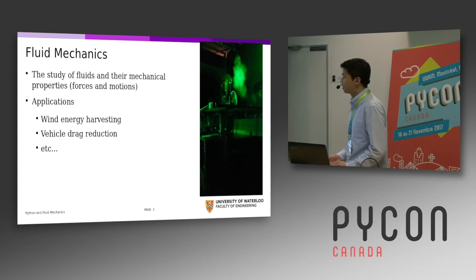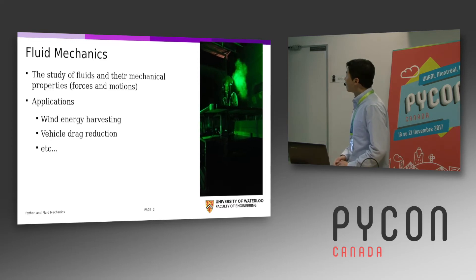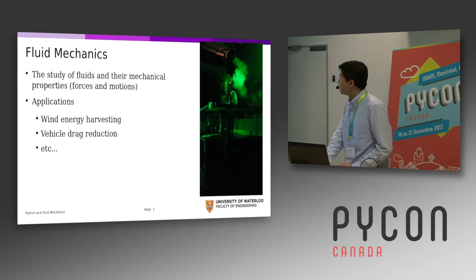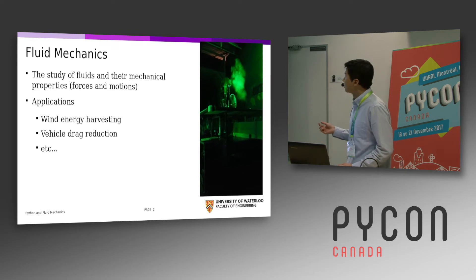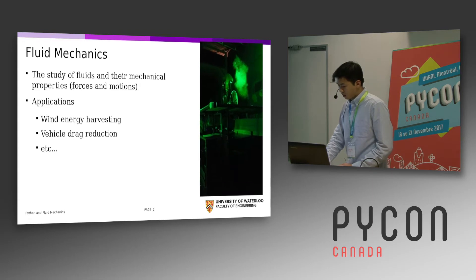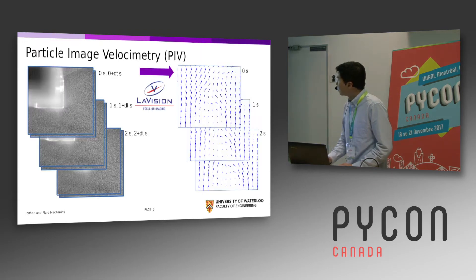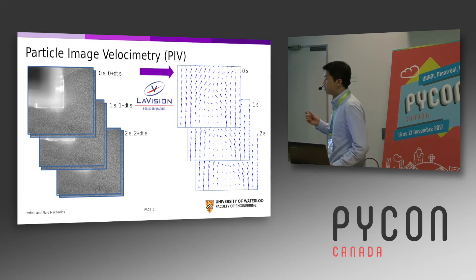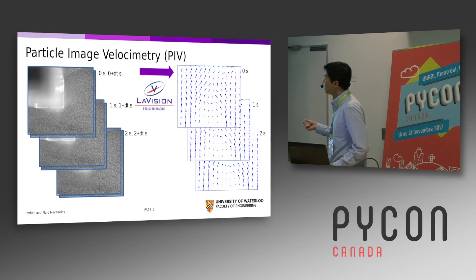This whole setup is part of a measurement technique called Particle Image Velocimetry, abbreviated as PIV. This technique measures the velocity of the flow by tracking those particles. PIV takes very tightly spaced images in time and then uses some correlation between those images to calculate how far those particles have moved. This is usually done in software like LaVision.